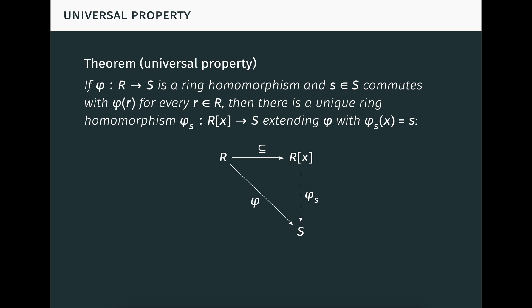This is the universal property. If phi from R to S is a ring homomorphism, and the element s in S commutes with phi of r for every element r in R, then there's a unique ring homomorphism phi_s from the polynomial ring R[x] to S, extending phi and mapping x to s, as seen in this diagram. Note the rings R and S here need not be commutative. However, the commutativity condition for the element s is required, since the indeterminate x commutes with every element of R in the polynomial ring R[x] by definition. We call phi_s substitution of s, or evaluation at s over phi.